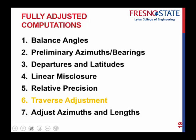Based upon that information, we need to make some corrections. We did balancing of the angles - all that was just a balance. We threw in the exact angles; we didn't adjust distances at all. We calculated preliminary azimuths, and from those azimuths and from the distances that we originally measured, we calculated our departures and our latitudes. Then we determined how well we did - our linear misclosure and our relative precision.